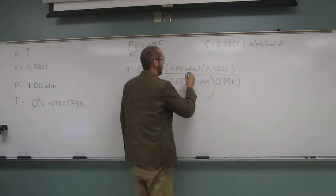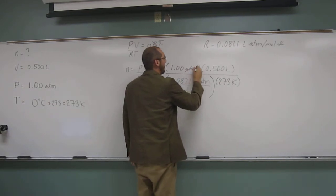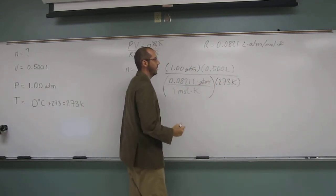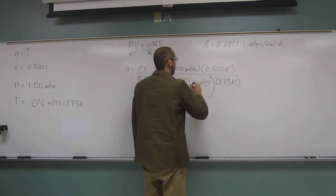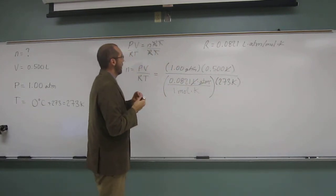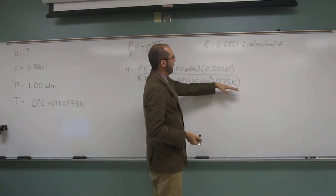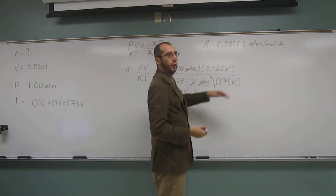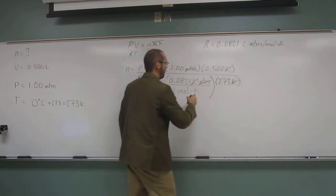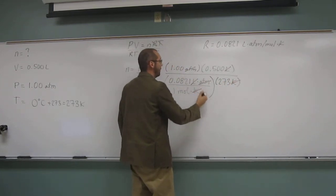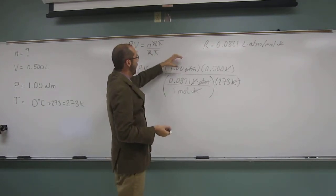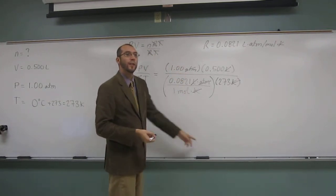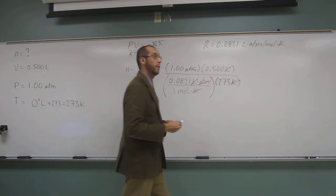So, let's go ahead and cancel out. We've got ATM on the top, ATM on the bottom. So, we cancel that out. Liters on the top, liters on the bottom. And then we go down to the denominator. We see at the top of the denominator, we have Kelvin. At the bottom of the denominator, we have Kelvin. So, those cancel out. So, 1 divided by 1 divided by moles, that's going to make moles our units of this one.